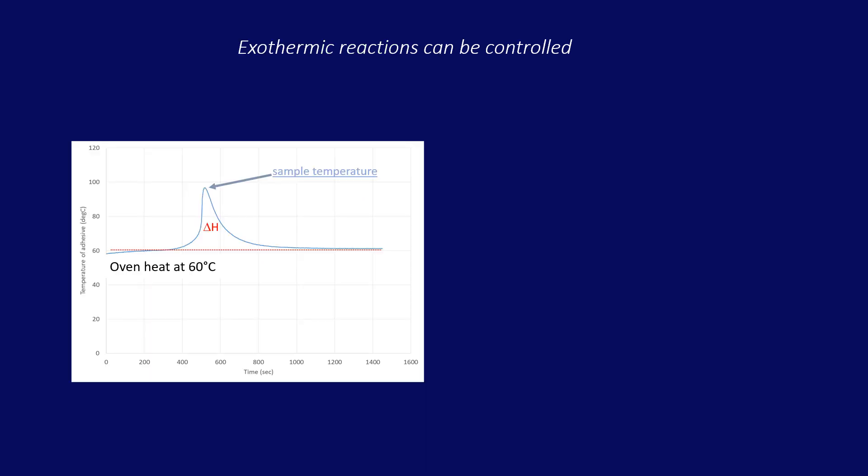In a standard oven, the air temperature is controlled, with the assumption that the sample temperature will be similar. In fact, chemical reactions often include an additional exothermic heat generation that can affect additional components nearby. In this example, the intended oven temperature was set to 60°C, but a chemical exotherm pushed the sample up to 97°C for a while.